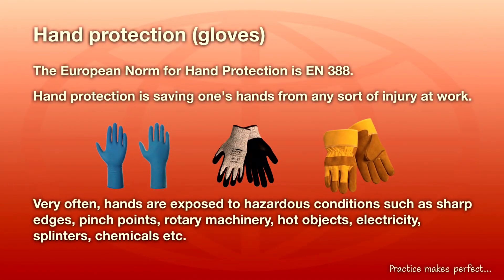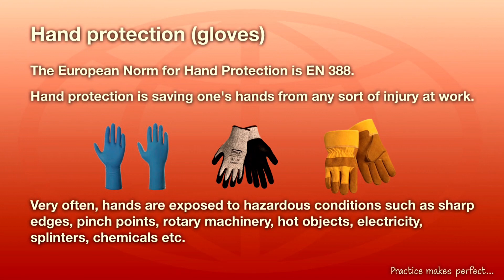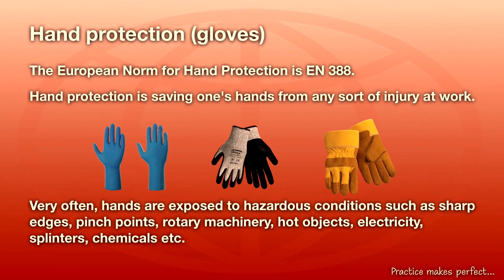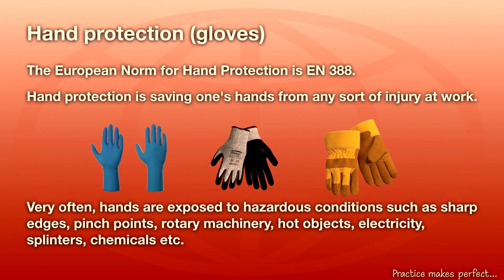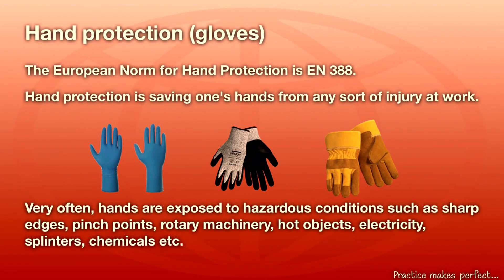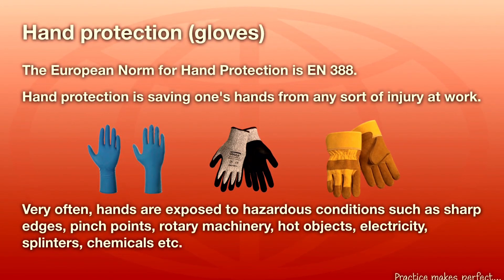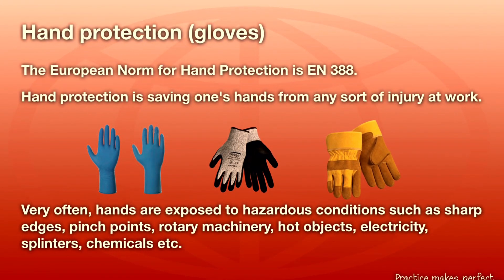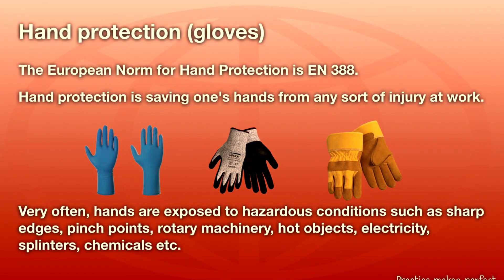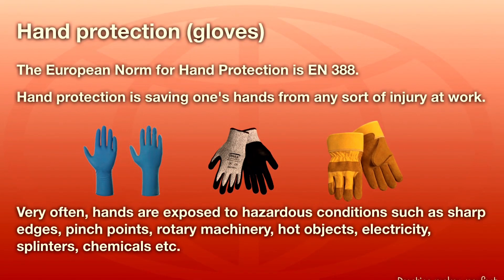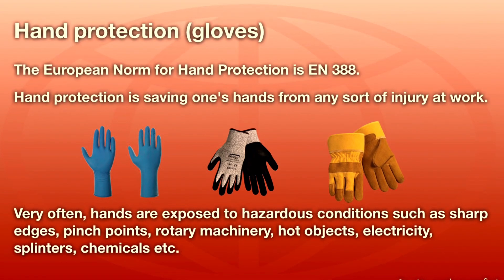Hand protection: the European norm for hand protection is EN388. Hand protection is used to protect the wearer's hands from sharp edges, pin points, rotating machinery, hot objects, electricity, splinters, chemicals, and more. The selection of correct hand protection is very important.